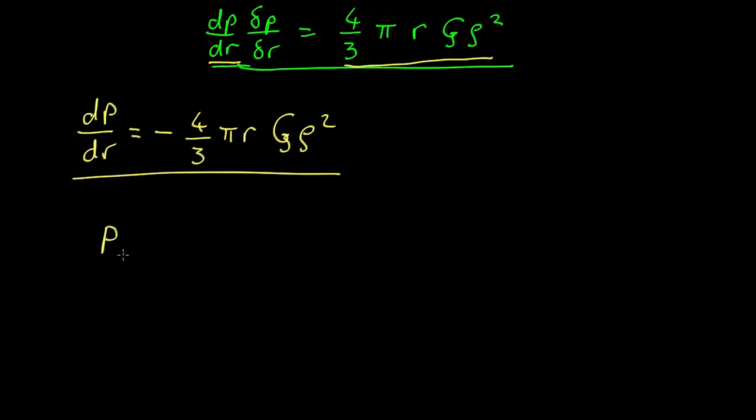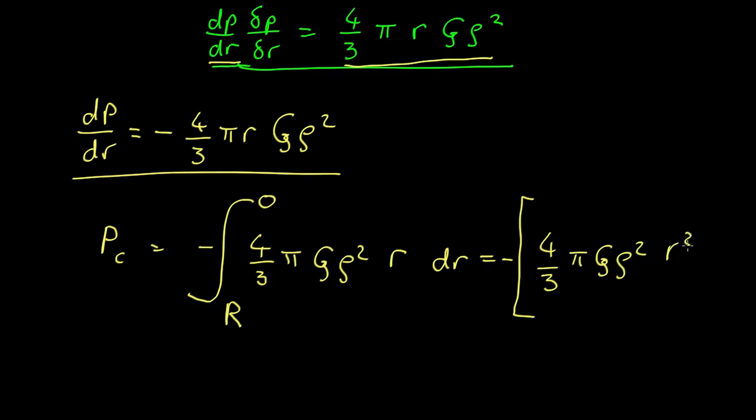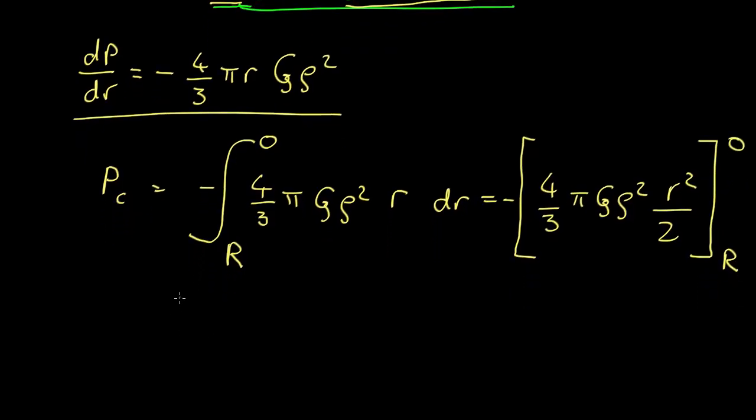So the pressure in the center is going to be the integral from the surface (I call that a big R, the radius of the star) down to the center of minus four thirds pi g rho squared. Those are all constants so they can go outside the integral r dr. So it's basically the integral of r which is a half r squared. So this comes out as minus four thirds pi g rho squared r squared over two from R to zero, which just comes out as two thirds pi g rho squared R squared.